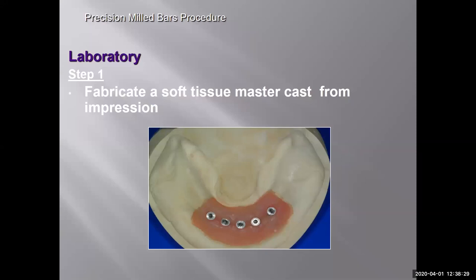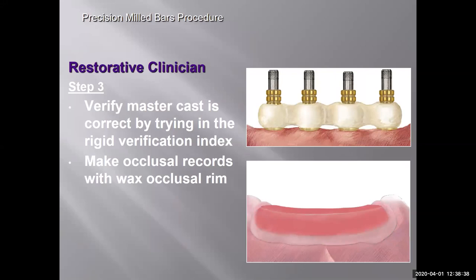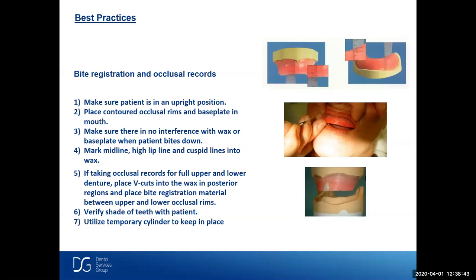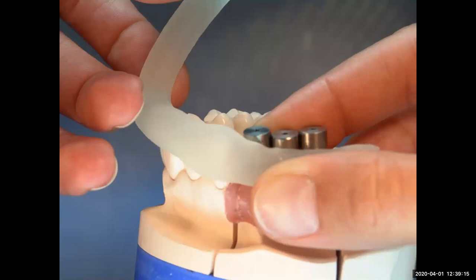To review: first fabricate a soft tissue master cast from the impression, make the verification index, then take the occlusal rim. Verify the cast is correct and take occlusal records — for an upper we need midline, cuspid line, high lip line, and smile line. Utilize temporary cylinders to keep the bite registration in place. The Primatex splint material is excellent for verification indexes because of minimal shrinkage and expansion. Wrap it around temporary cylinders, put it in the light cure unit for about three minutes, and you have your verification index.